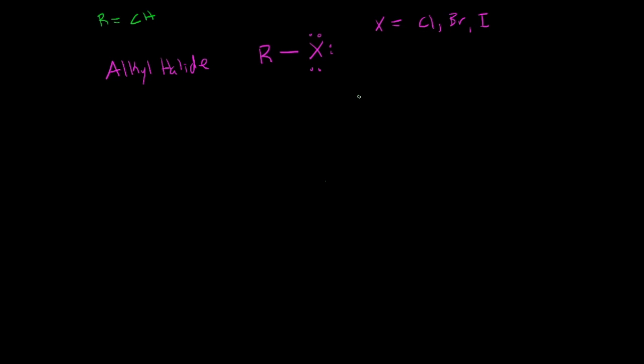An example would be right here with your Cl group right there. This is one, two, three carbons attached to a chlorine. The name of this would be n-propyl chloride.